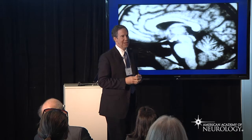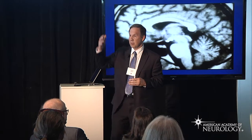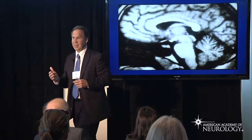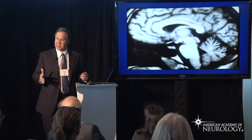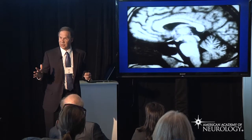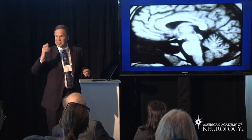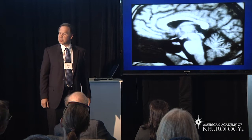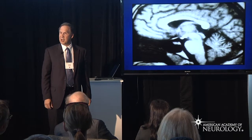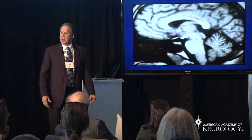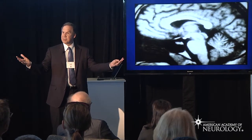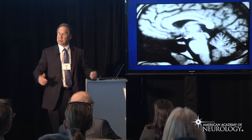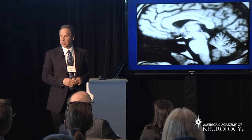Motor information goes from New York to Philadelphia, and sensory information goes from Philadelphia to New York. And like every self-respecting highway, there are on and off ramps. In the brainstem, these represent the cranial nerves.